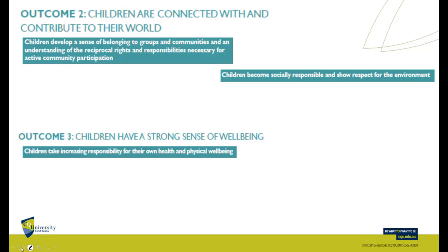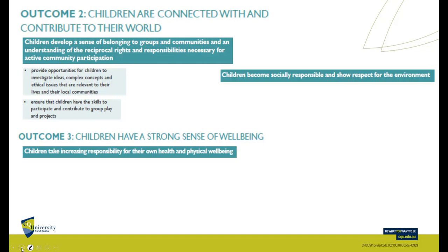There are five outcomes and it would take too long to go through all five, but the key idea: under outcome two, two major elaborations — children develop a sense of belonging to groups and communities, and reciprocal rights and responsibilities. As teachers we try to manifest this outcome by providing opportunities for children to investigate ideas, complex concepts, and ethical issues. Ensure that children have the skills to participate and contribute to group play and projects — which is really talking about science inquiry skills.